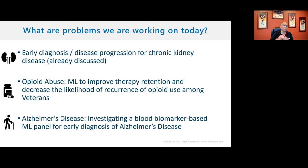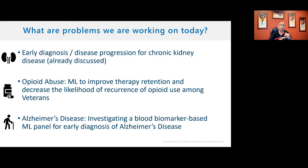I'm also working with the Veterans Administration — the largest healthcare system in the US with 9 million patients — looking at the opioid abuse problem. We're looking at opioid recurrence: you get opioid abuse, get treated, and then go back. Veterans are twice as likely to have opioid abuse. We're learning which treatment is more likely to prevent recurrence, and looking at socioeconomic data — social determinants — to figure out how poor, rural, race affects outcomes.